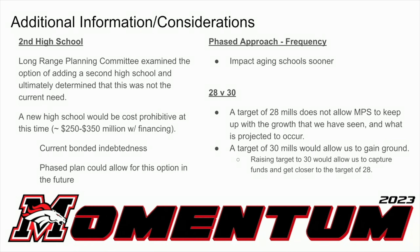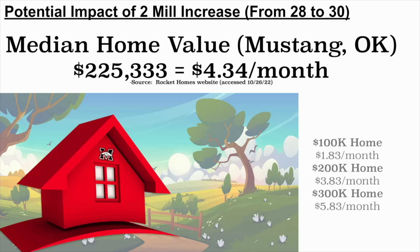If we move to a target of 30 mills, this will keep us at probably a few hundred thousand more than the current $1.9 million, and we would be able to at least maintain the quality and attention to safety, security, transportation, and all those things affected by recurring dollars. What does that mean to the average Mustang resident? We're talking about a two-mill increase going from 28 to 30. Using the median home value in the Mustang school district of $225,333, the impact of two mills would be $4.34 per month.